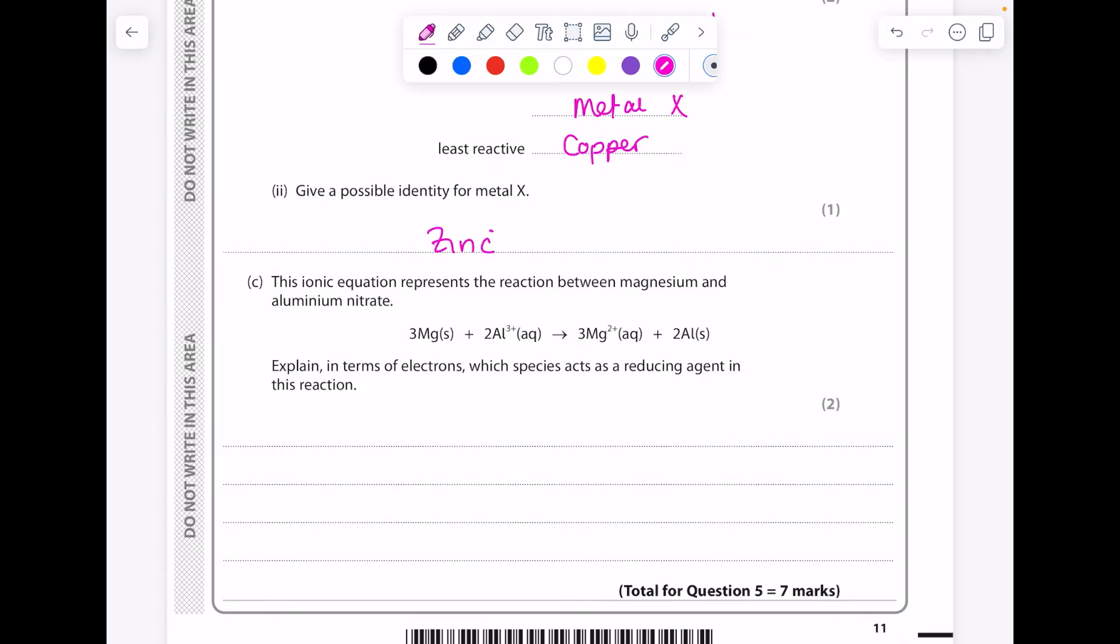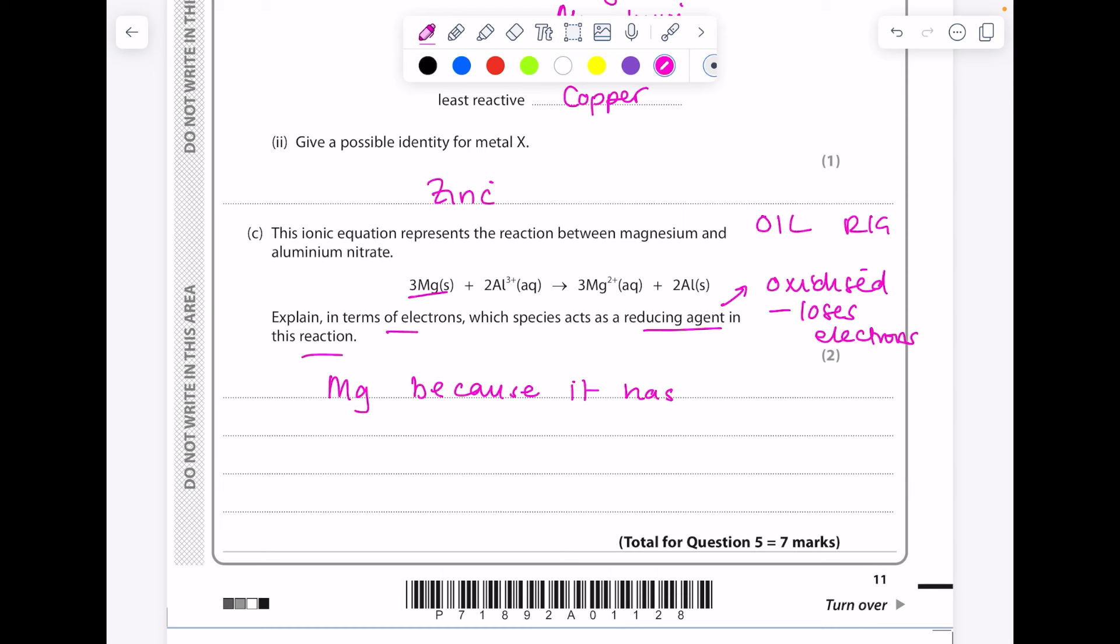The ionic equation represents the reaction between magnesium and aluminum nitrate. Explain in terms of electrons which species acts as a reducing agent in this reaction. So a reducing agent by definition is oxidized, which means it loses electrons according to OIL RIG: oxidation is loss of electrons, reduction is gain. So check these out. Which species has lost electrons? Well, it must be magnesium because it becomes a positive ion, which means it must have lost electrons. And that is the simplest way to get those two marks.